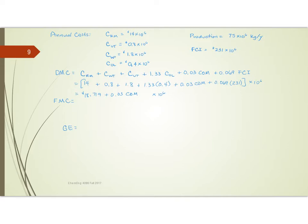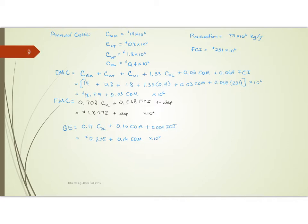For fixed manufacturing cost, the formula gives 1.8472 times 10 to the sixth, plus depreciation. For general expenses, we get approximately 0.25 million plus 0.16 times the cost of manufacturing. Adding everything up — using the formula where we divide through by the constant — we get a total cost of manufacturing of 25.65 million plus depreciation.